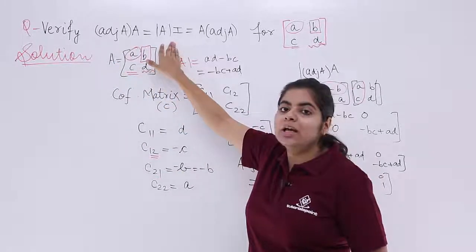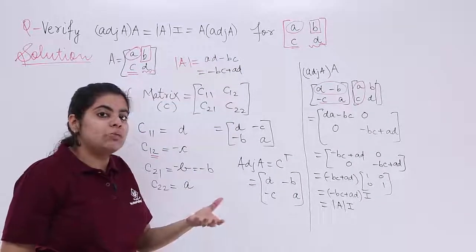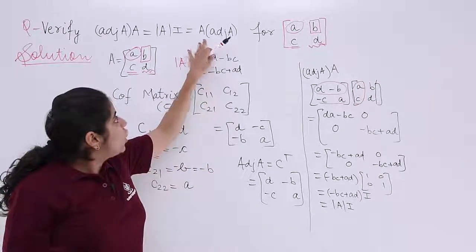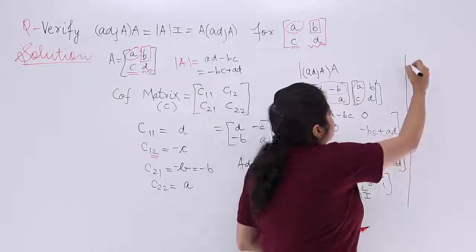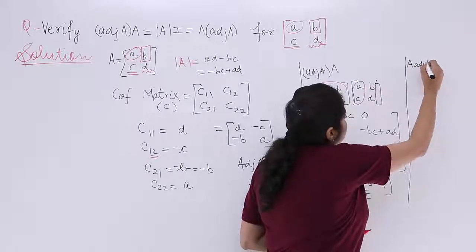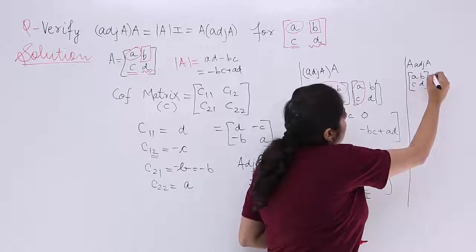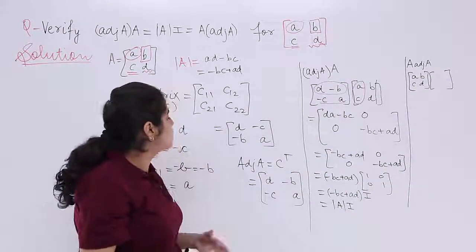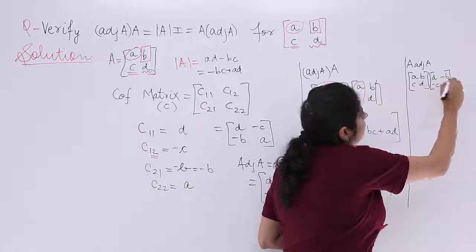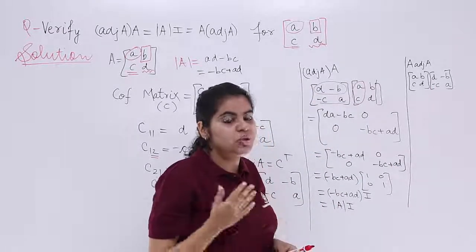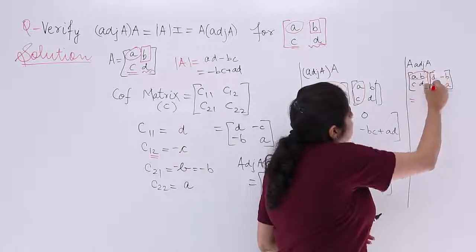Now we need to verify the second part: A × adjoint(A) should also equal det(A) × I. So let's compute A × adjoint(A). A = [[a, b], [c, d]] multiplied by adjoint(A) = [[d, −b], [−c, a]]. Computing: (1,1): ad−bc; (1,2): −ab+ba = 0; (2,1): cd−dc = 0.